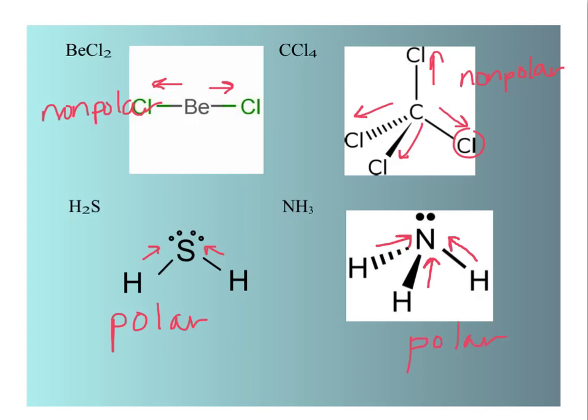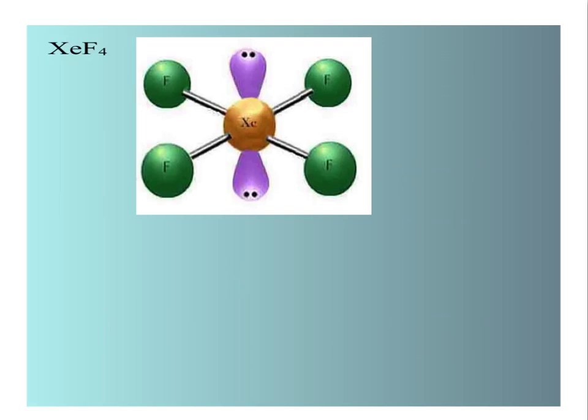In xenon tetrafluoride, the fluorines are going to attract the electrons more than the xenon. And this shape is the square planar shape. So it's kind of like two linears put together. The fluorines will attract the electrons, but there's always a fluorine directly across from it pulling back. So this one is a non-polar molecule.